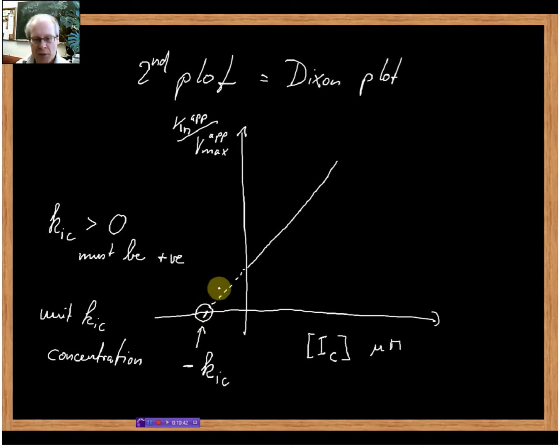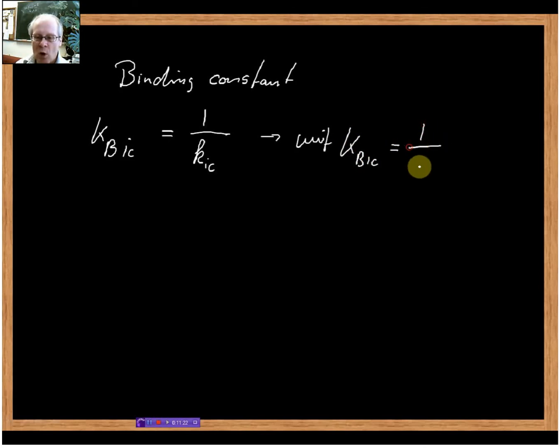With that we can very easily determine our KIC with this kind of plot. Let me quickly introduce you to the concept of the binding constant. The binding constant, usually abbreviated as KBIC, is defined as 1 over KIC. The binding constant is the inverse of the dissociation constant and would have the unit of 1 over concentration. Usually we don't bother too much with the binding constant because we get all the important information from KIC.